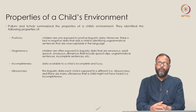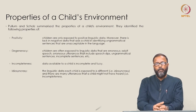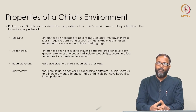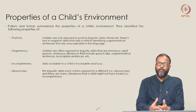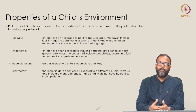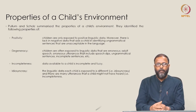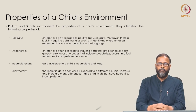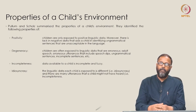Pullam and Shoals try to define the characteristics of the environment and properties of data available to a child, reinforcing Chomsky's poverty of stimulus idea. They come up with four important characteristics of such data: number one, positivity; number two, degeneracy; number three, incompleteness; and number four, idiosyncrasy.